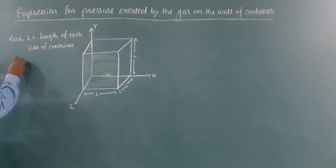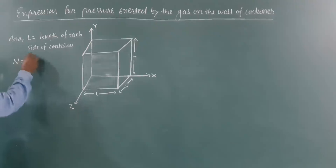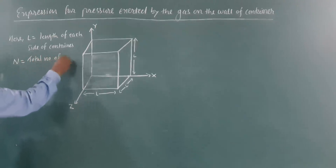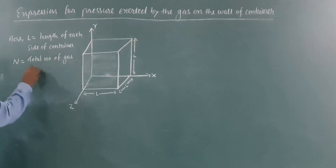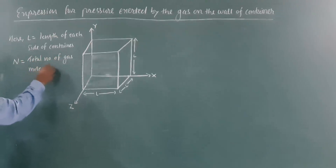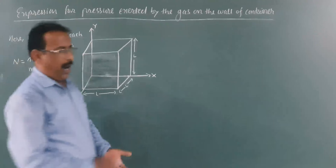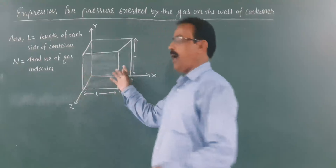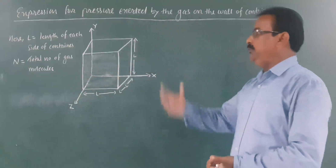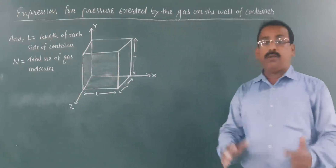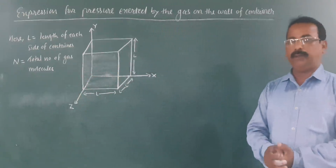Let N represent the total number of gas molecules enclosed in this cubical container. Assume that this ideal gas exerts equal pressure on all six surfaces of the container.